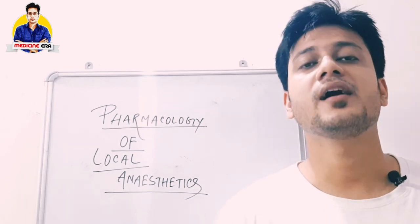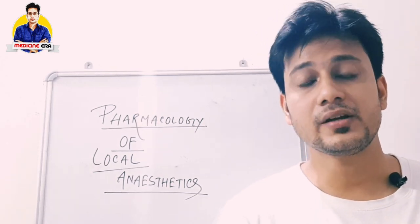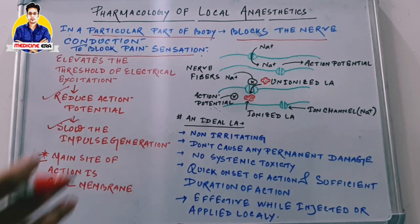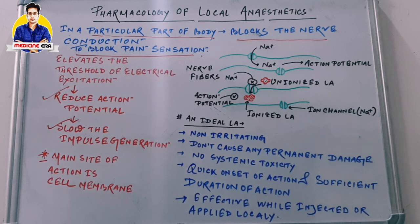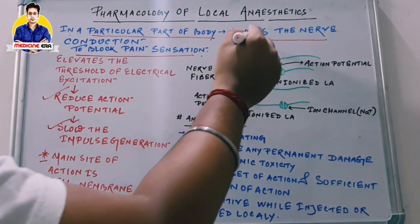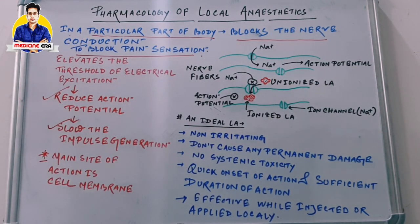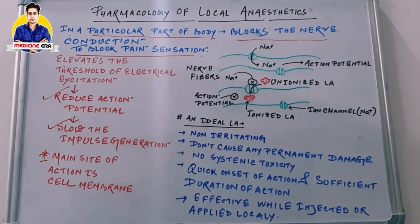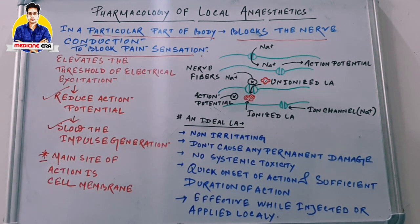Hello viewers, welcome to my channel Medicine Era. I am Mayuk and today we start a topic on pharmacology of local anesthetics. Local anesthetics are the medications used to inhibit the pain sensation in case of surgery. In a particular part of the body, they block the nerve conduction to block pain sensation, and this is called local anesthetics.